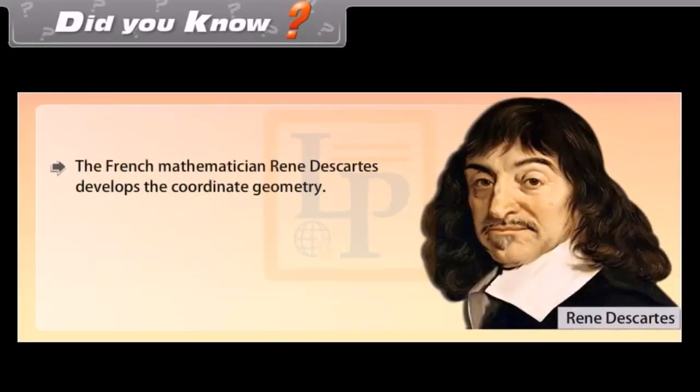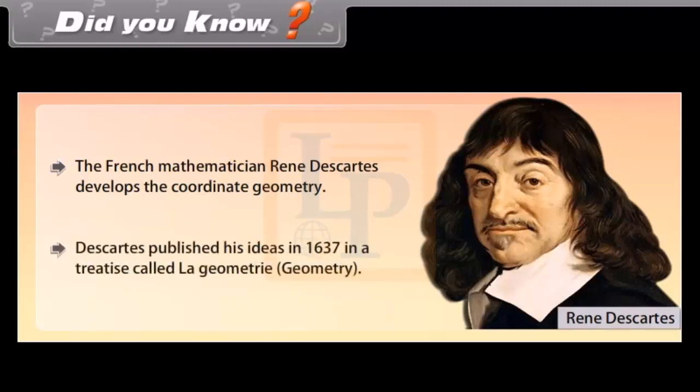Did you know the French mathematician René Descartes develops the coordinate geometry. Descartes published his ideas in 1637 in a treatise called La Géométrie.